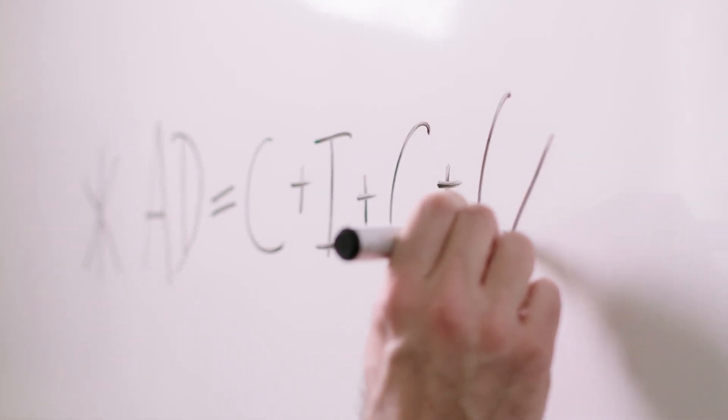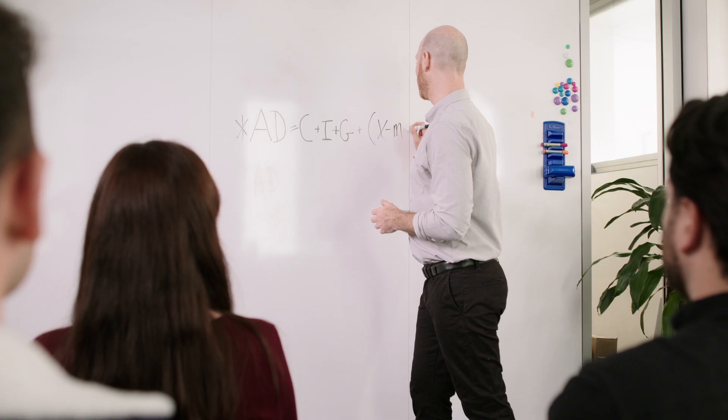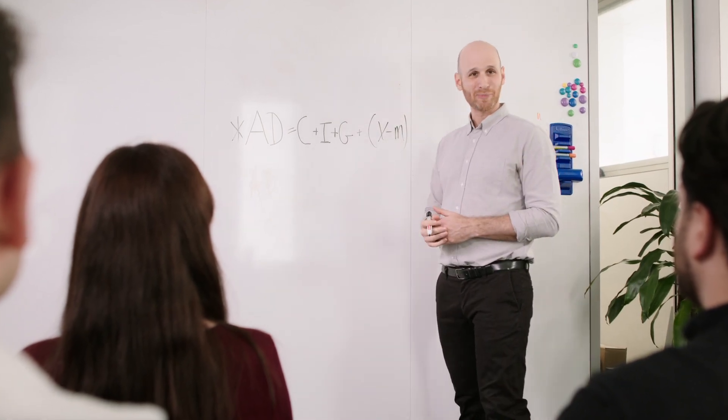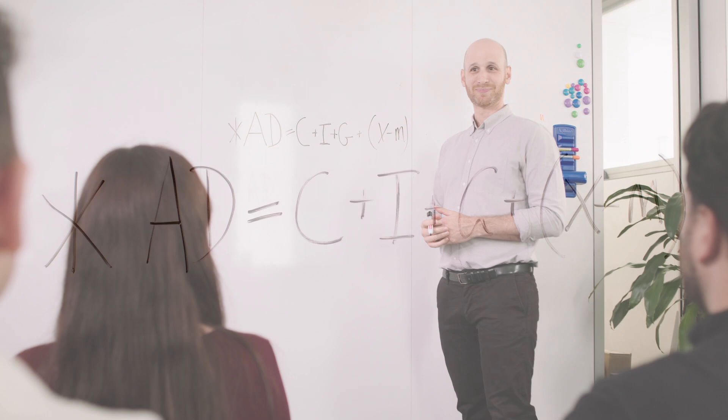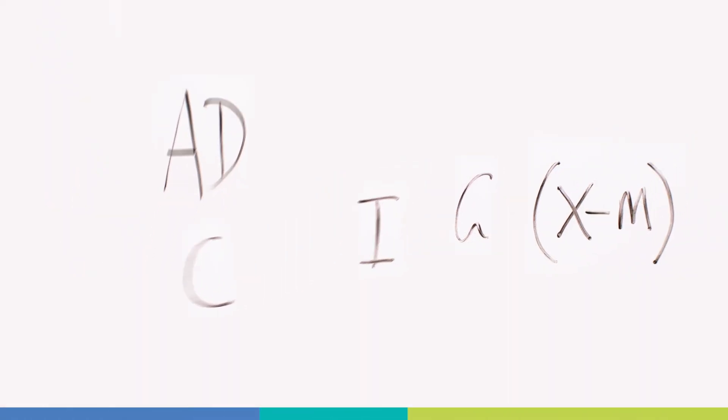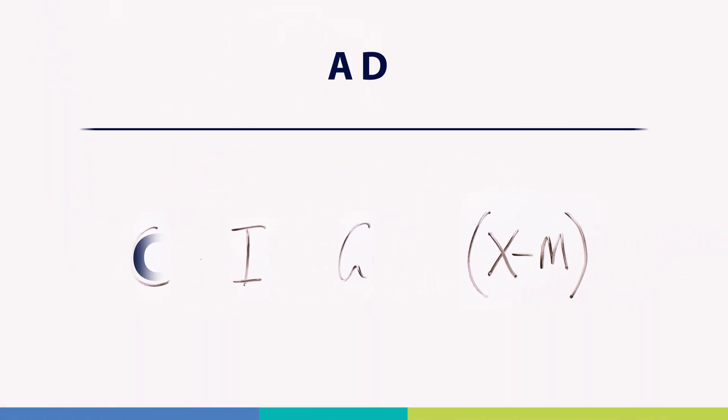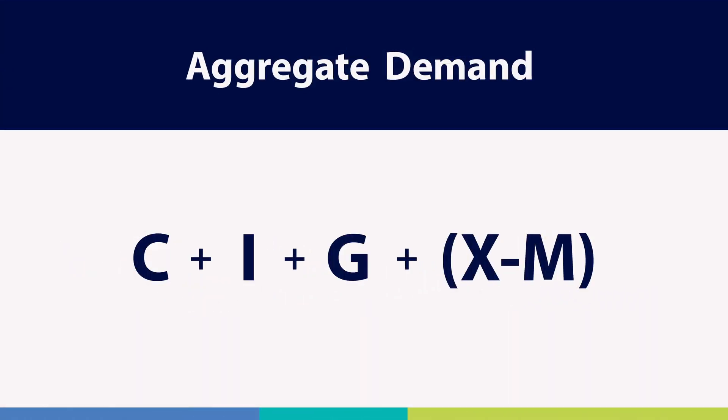Now we're going to look at one of the most fundamental concepts in economics: the aggregate demand equation. The aggregate demand equation gives us a clear and simple framework to think about the economy. The equation measures how much consumers, businesses and the government are spending on finished goods and services in the economy, and how different activities contribute to the economy's size and its rate of growth.